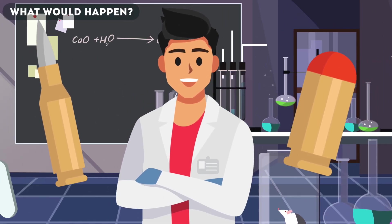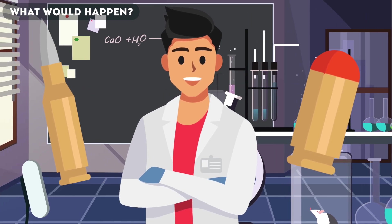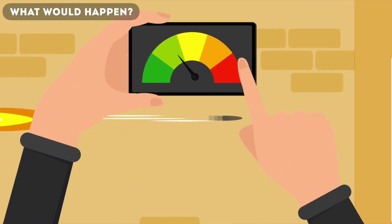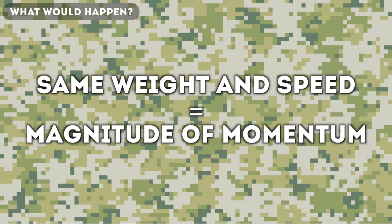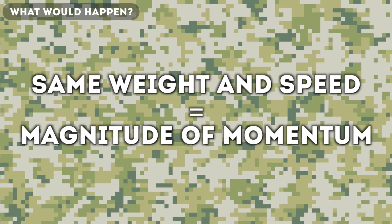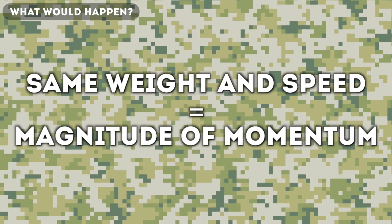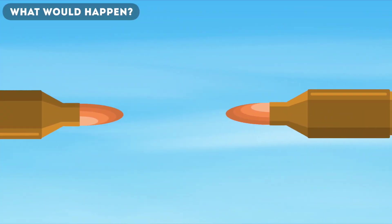So what would actually happen if two bullets went right into each other? Well, there's actually two different answers to this. But first, let's look at a case where the bullets are going at the same speed. If the bullets were the same weight and going at the same speed, then they would have the same magnitude of momentum.